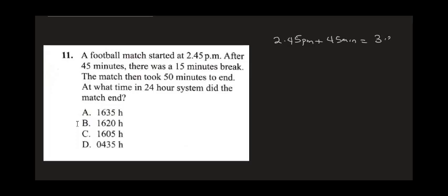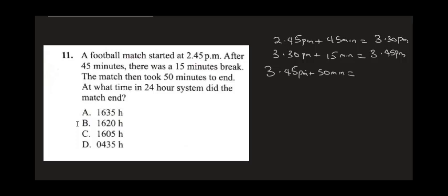2:45 plus 45 minutes gives 3:30 p.m. Then adding the 15-minute break gives 3:45 p.m. Then they played for another 50 minutes, so adding 50 minutes to 3:45 gives 4:35 p.m.